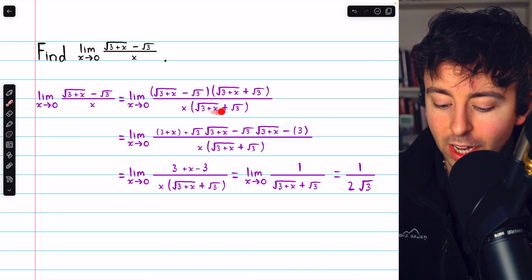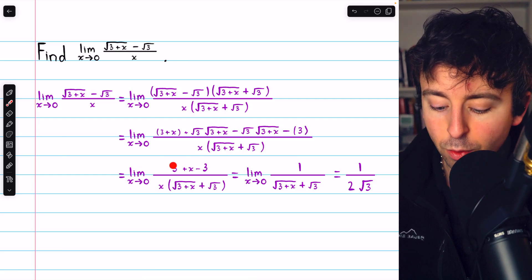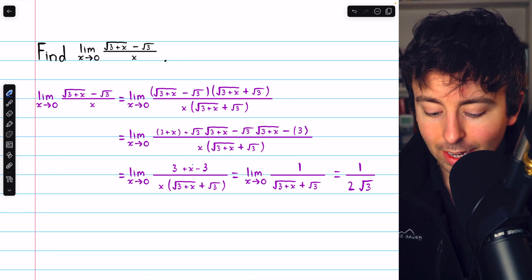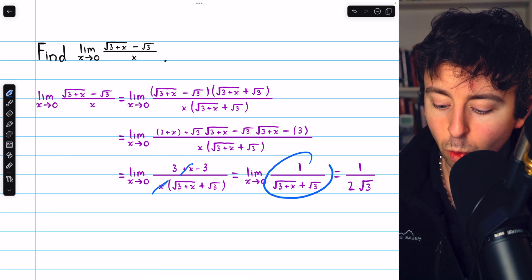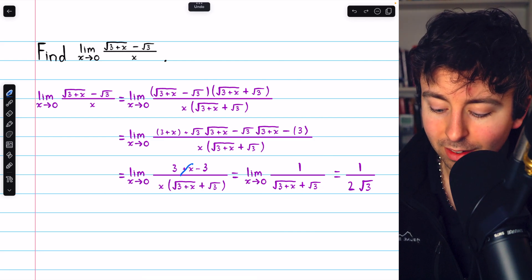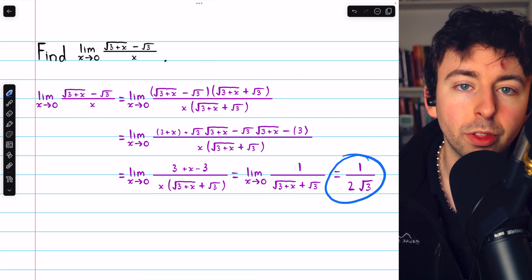Multiply by the conjugate, distribute, cancel out those middle terms, 3 minus 3 cancels out, x and x cancel out, then it's just 1 over some stuff, plug in x equals 0, and we get 1/(2√3).